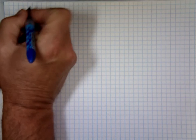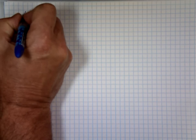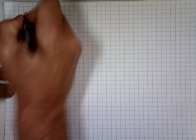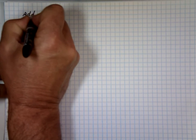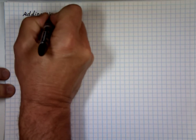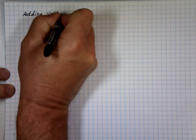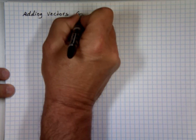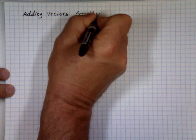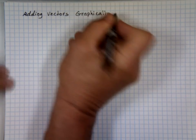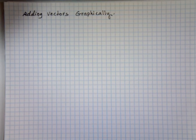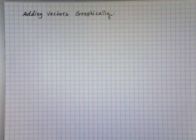The topic is adding vectors graphically. After we finish with that, we'll add vectors using trig. Trig is more accurate, but for now we'll practice how we do them graphically.